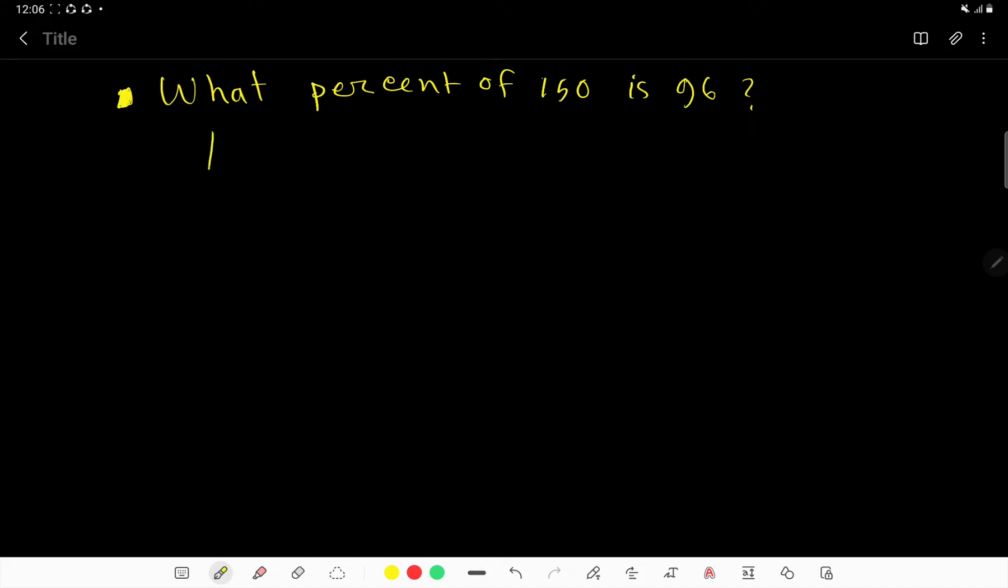So let's say what means x, percent means this percent sign, and of means multiplication sign. You can also express multiplication sign by dot, then 150, then is means equal sign, and then we have 96. So if you construct the equation, then you will get this.